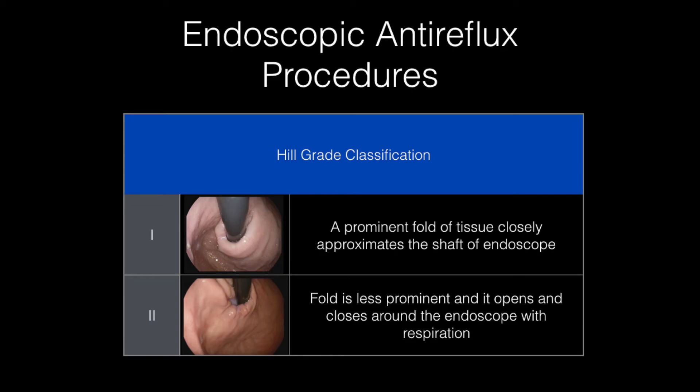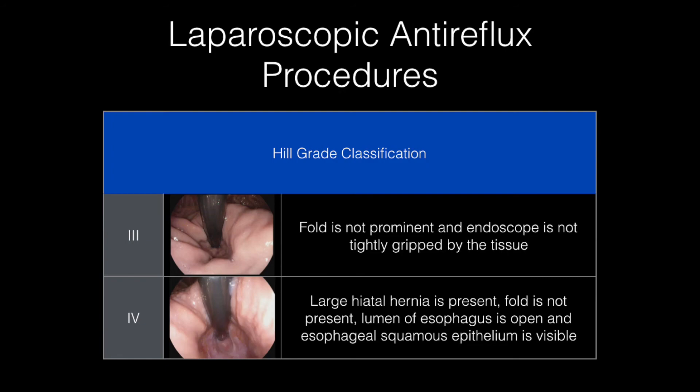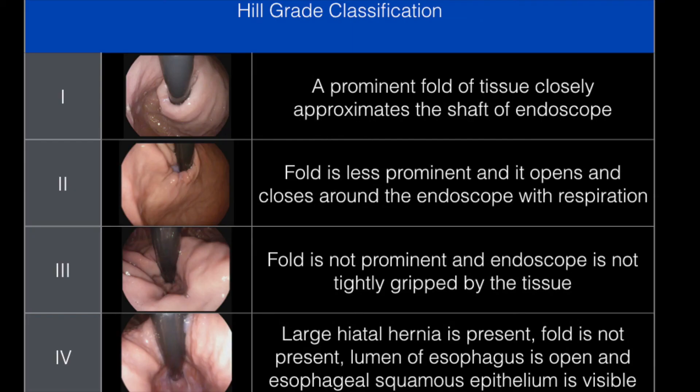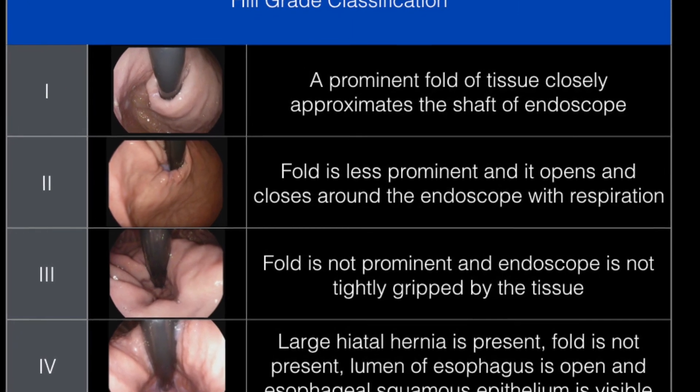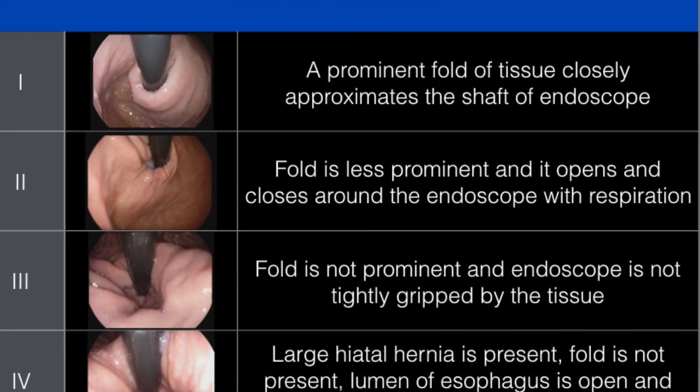Transoral endoluminal anti-reflux procedures can often be performed on patients with grade 1 or 2 valves, but they are not advised in patients with grade 3 or 4 valves where surgical approaches have been shown to provide better outcomes, due to the need to directly close the hiatus when it becomes substantially larger. We thank you for your time and we hope that this video tutorial will positively impact the management of your patients with gastroesophageal reflux disease.